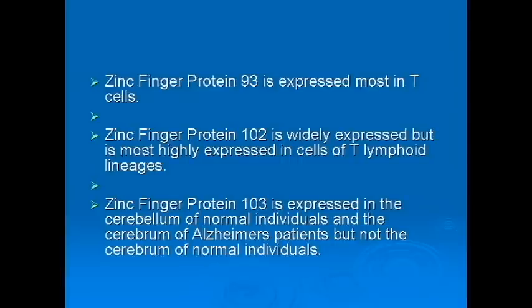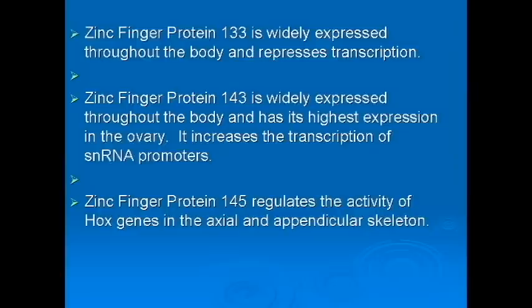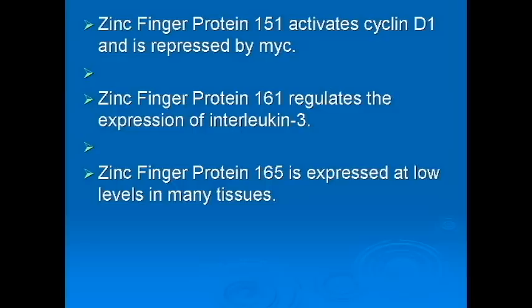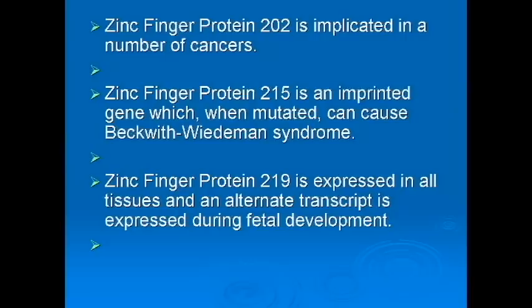The KRAB-associated box region is a conserved region of about 75 amino acids, which is found in about a third of the zinc finger proteins known in the human genome. KRAB transcription factors are only known in vertebrates.